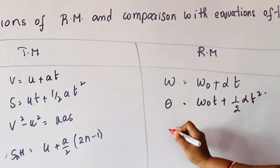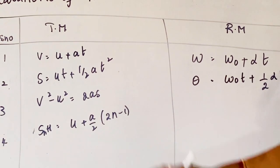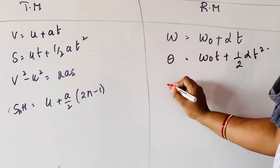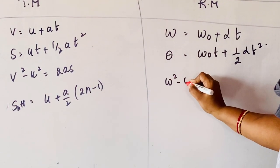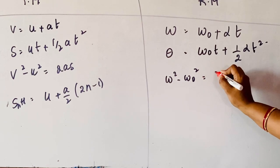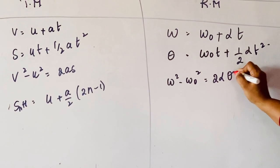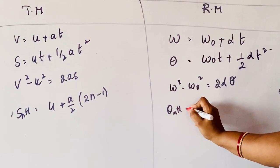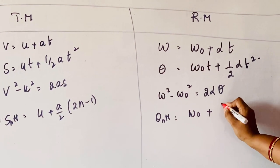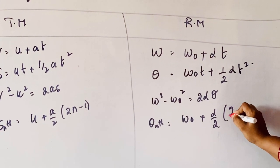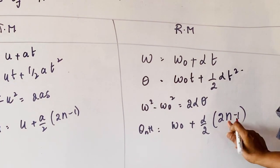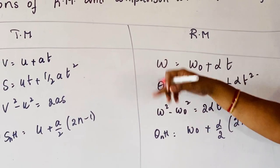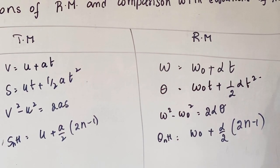The third equation: omega-squared minus omega-naught-squared equals 2·alpha·theta. The fourth equation: theta-nth equals omega-naught plus (alpha/2) times (2n minus 1), where nth indicates which second it is. These are all the analogous equations for rotatory motion corresponding to translatory motion.